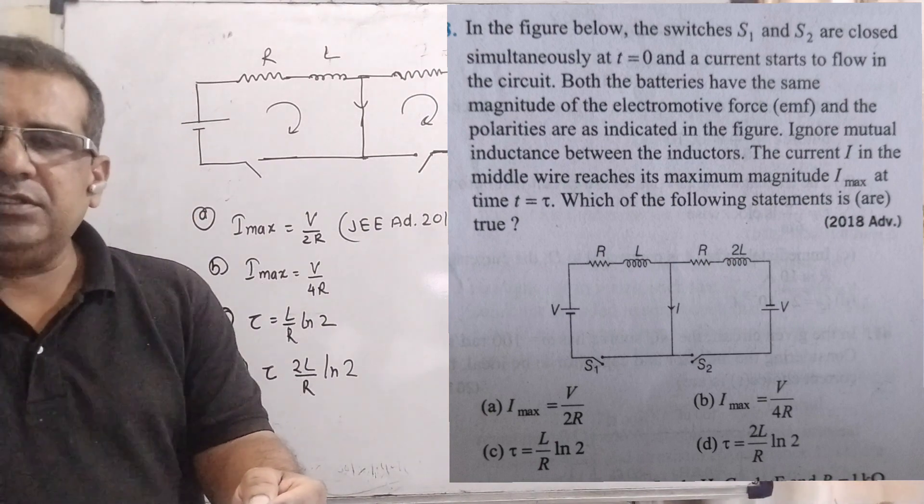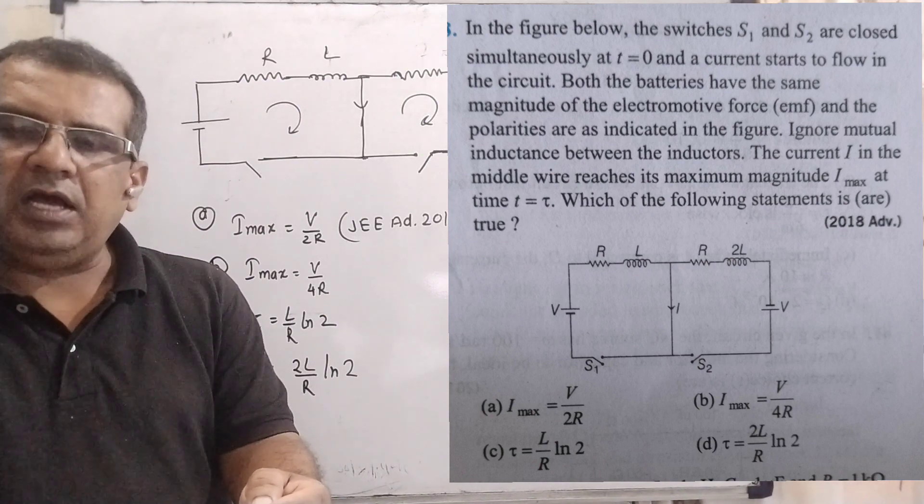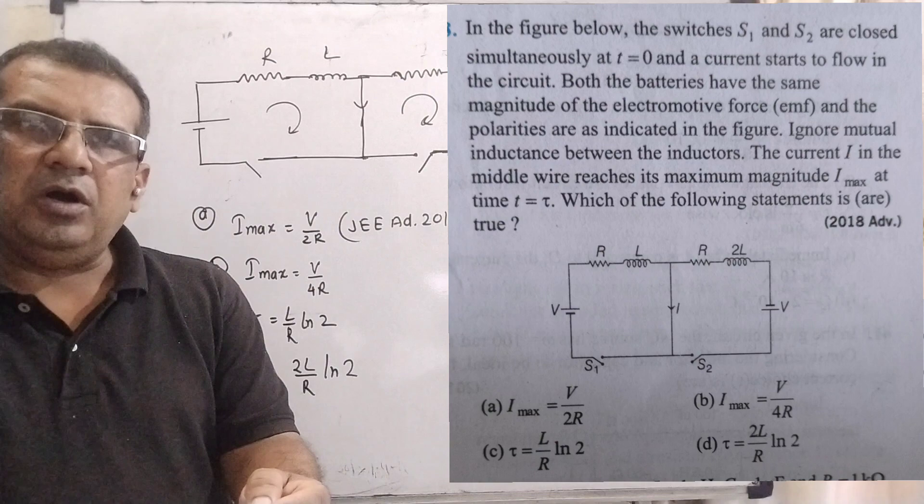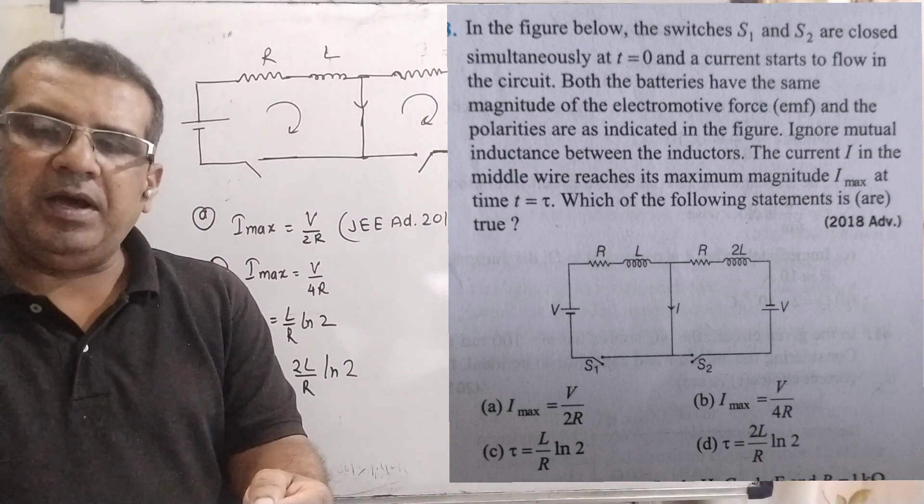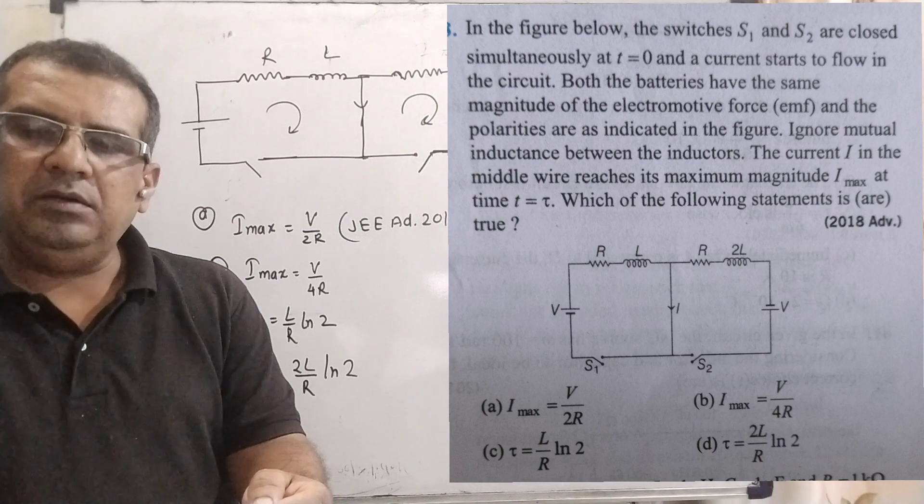Ignore mutual induction between the inductors. The current I in the middle wire reaches its maximum magnitude, I maximum, at time t equal to tau. Here tau is time constant. Which of the following statements are true? Option A: I max V upon 2R. Option B: I max V upon 4R. Option C: tau equal to L by R ln 2. Option D: tau 2L by R ln 2.